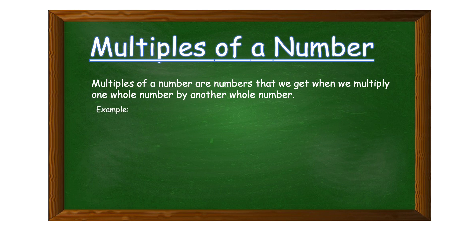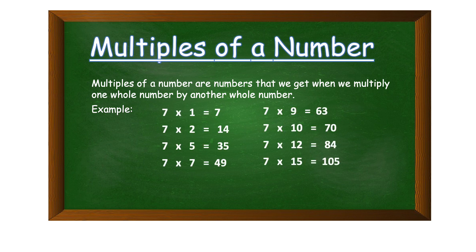Let's look at some examples. We're going to use the number seven with some random numbers. Seven times one is seven, seven times two is fourteen, seven times five is thirty-five, seven times seven is forty-nine, seven times nine is sixty-three, seven times ten is seventy.